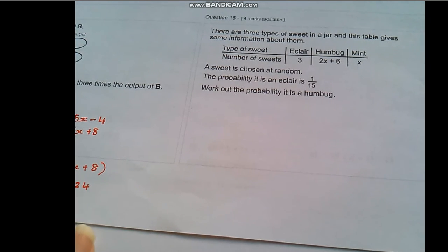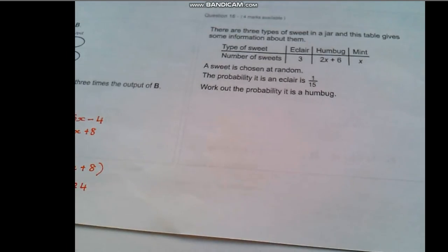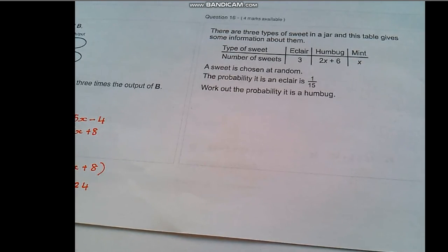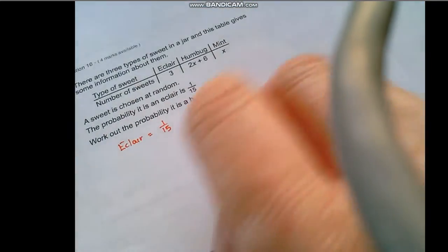Now first thing to think about here is what information does that give us. So the fact that we have the probability that it's an eclair equal to 1 out of 15. Well what we know is that we have three eclairs and therefore it must have been at some point three out of the total number of sweets that are in the jar.